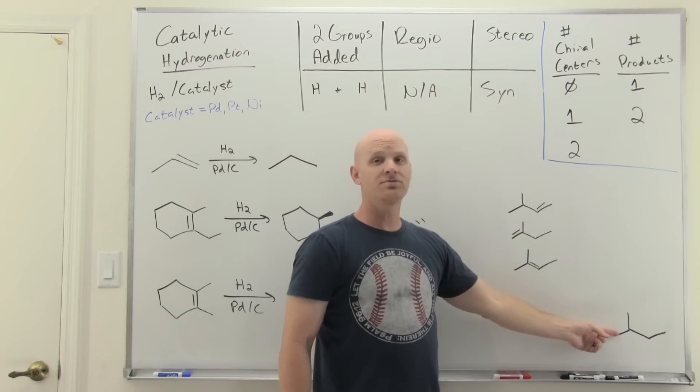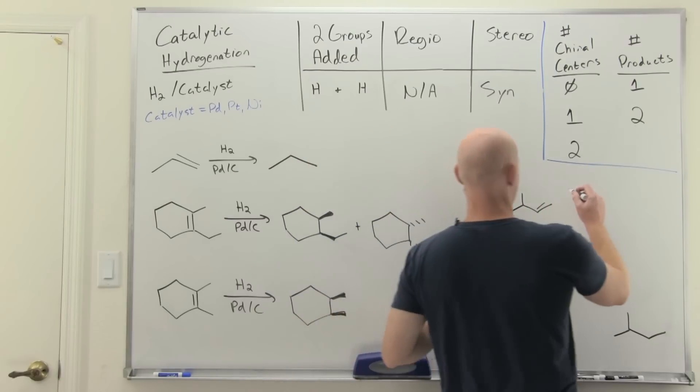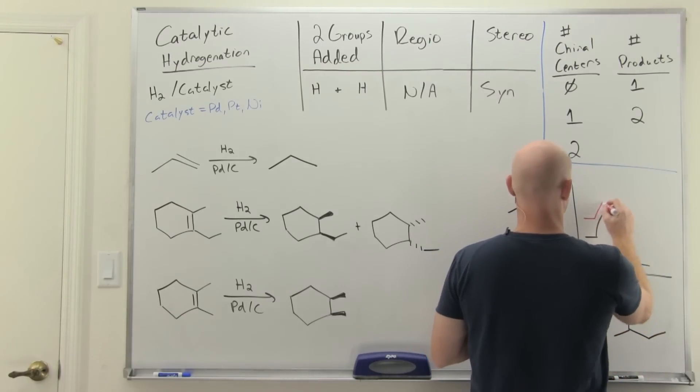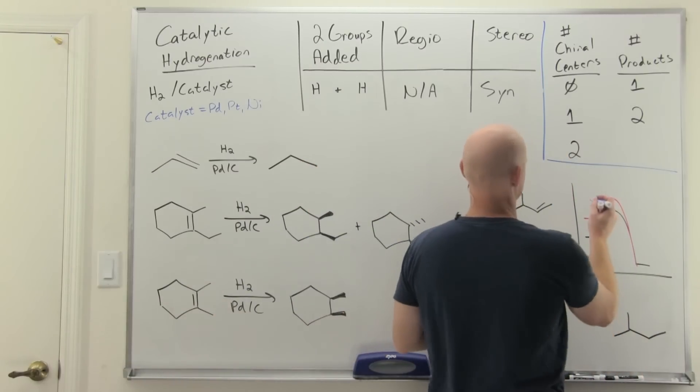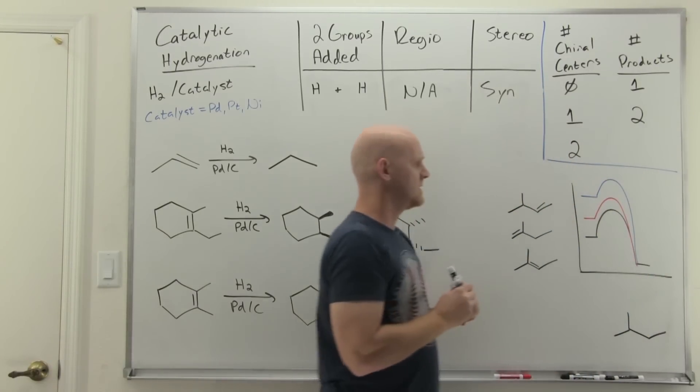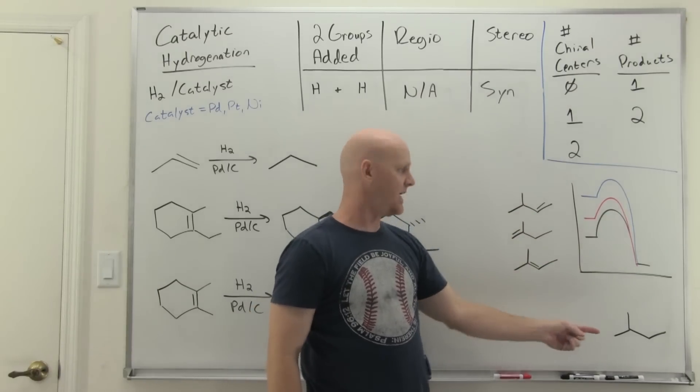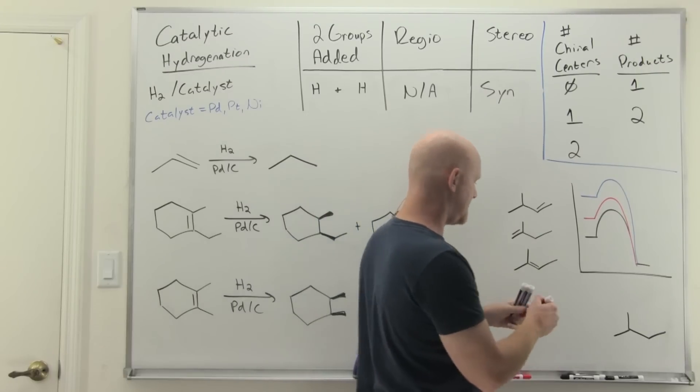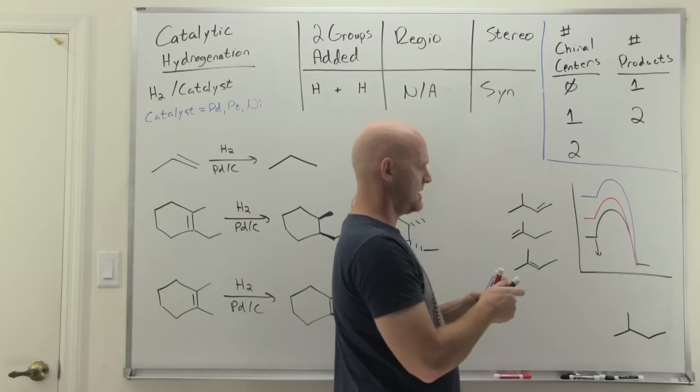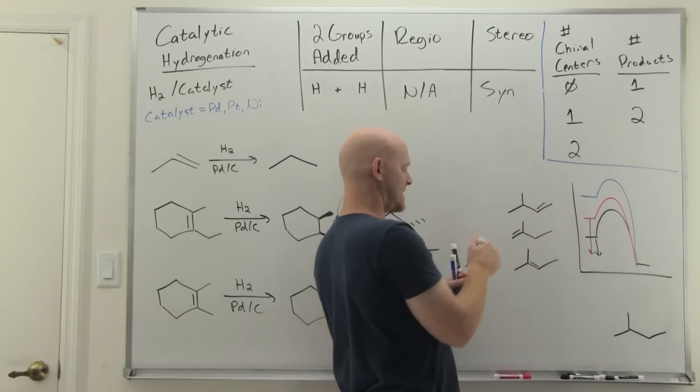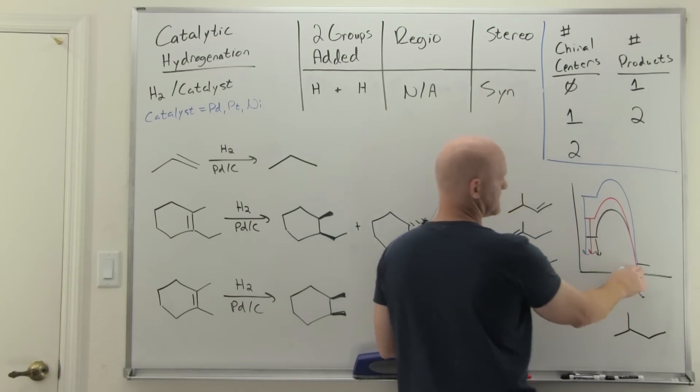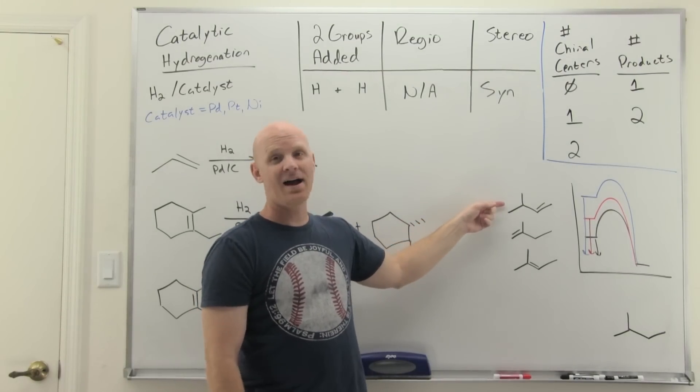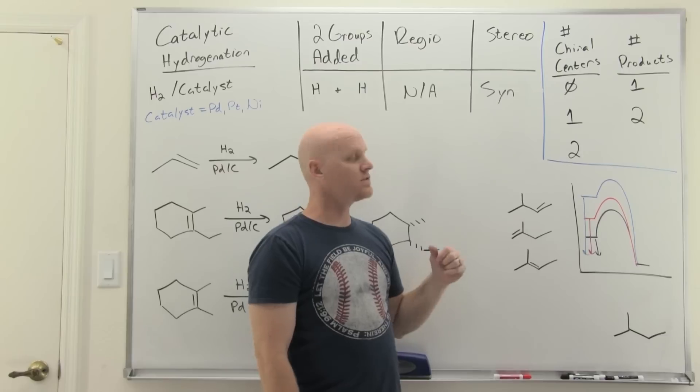We learned in the chapter on elimination reactions that the more substituted the alkene, the more stable. So this is the lowest energy alkene, this is the highest energy alkene. Upon hydrogenation, they all form a lower energy alkane. You're going to end at the same place in all three hydrogenation reactions, but you're going to start at three very different energies. The most substituted alkene would start at the lowest energy and therefore would be the least exothermic reaction. The next one would be a little more exothermic. And the least substituted alkene would have the most exothermic reaction. So the least substituted alkene, that starts off the highest energy, would have the highest heat of hydrogenation—it would release the most heat upon hydrogenation.